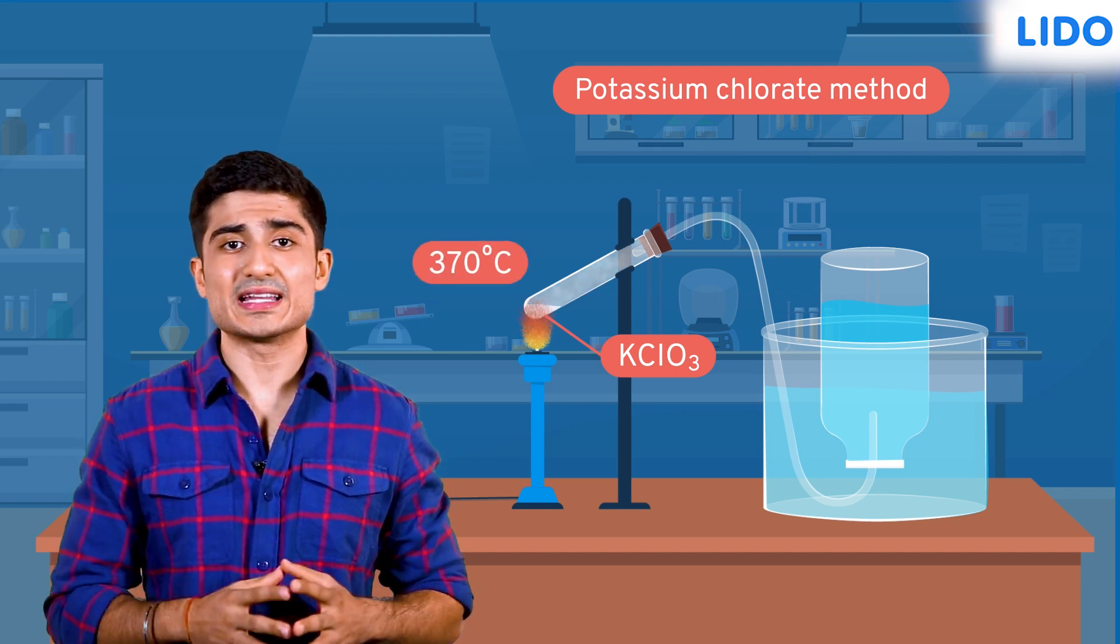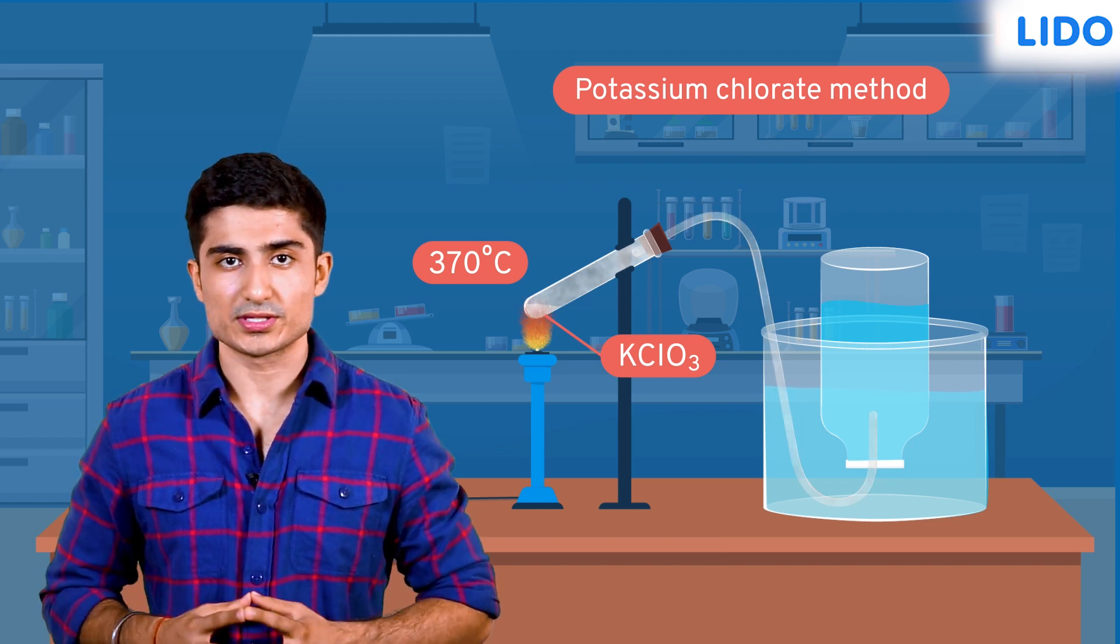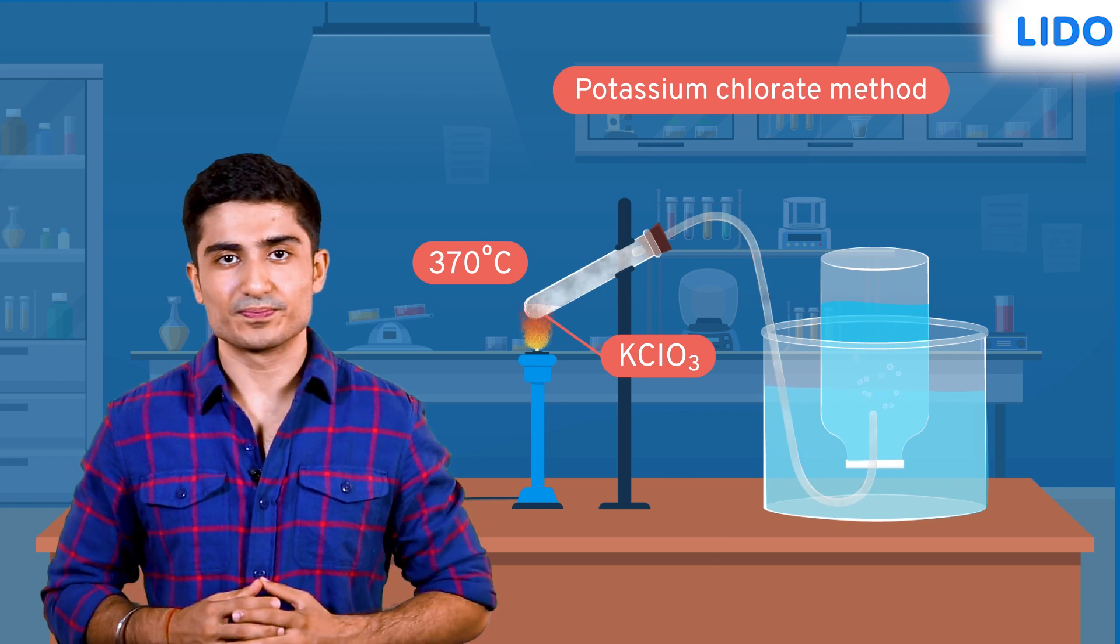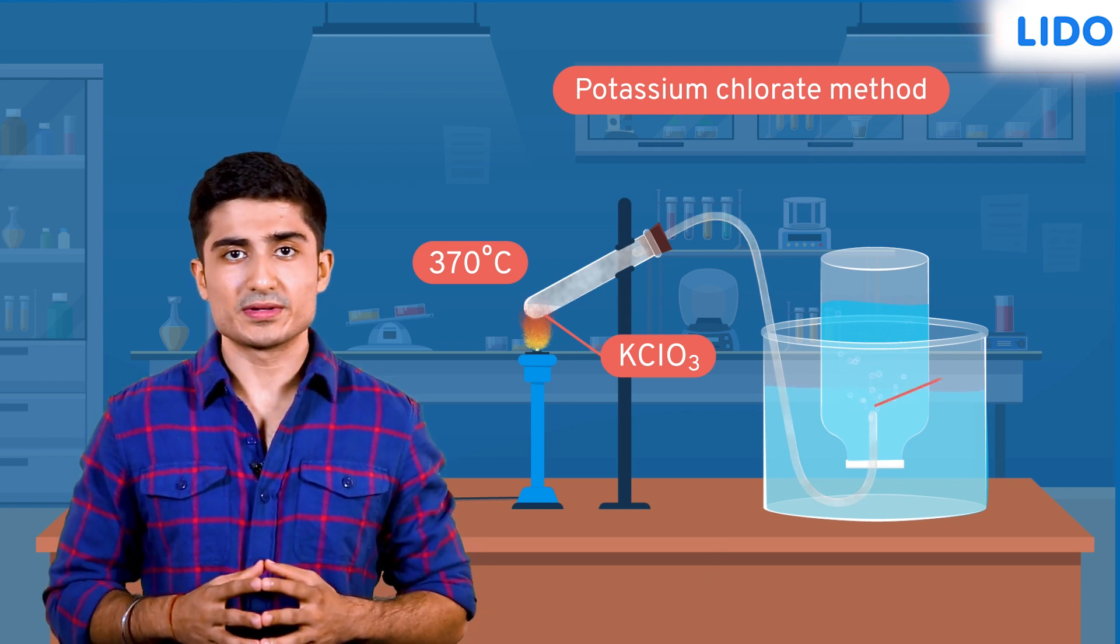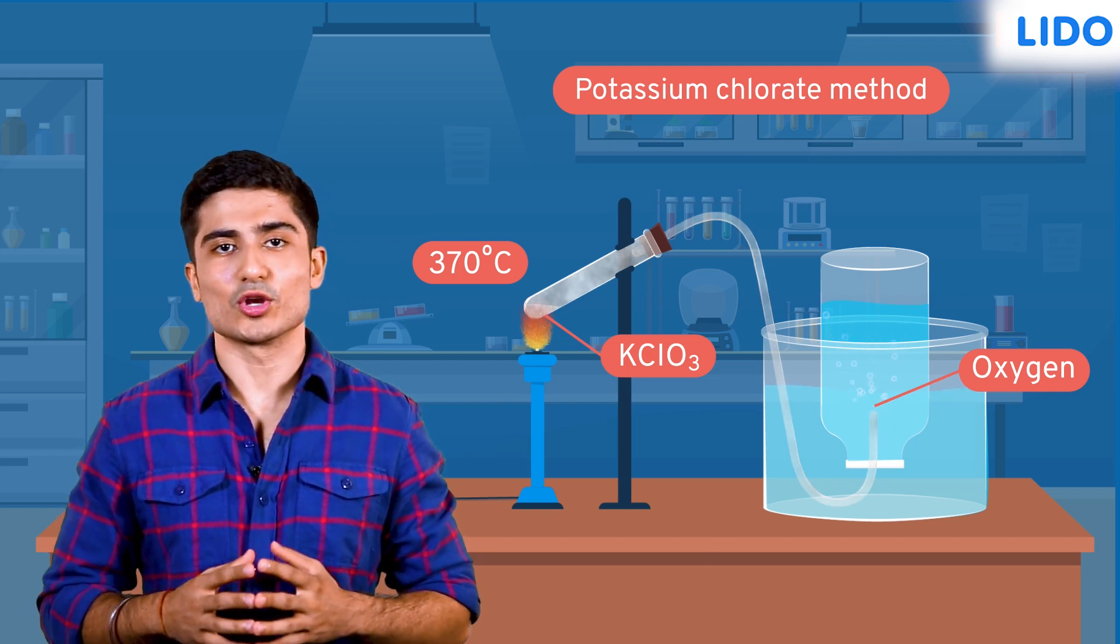When the temperature reaches about 370 degrees Celsius, the potassium chlorate begins to decompose. At this point there is a lot of gas released from the test tube. This evolving gas formed is oxygen gas. The product that remains back in the test tube is potassium chloride.